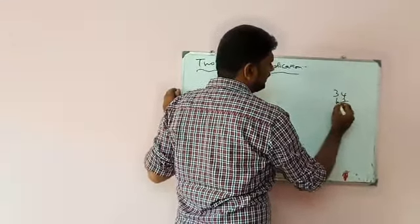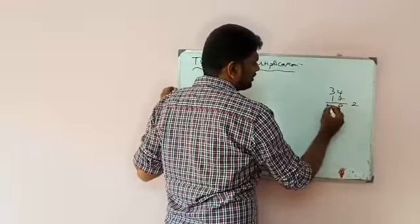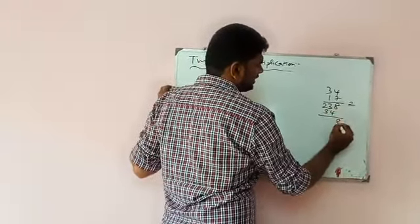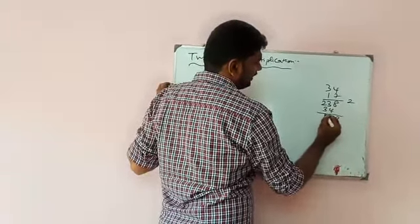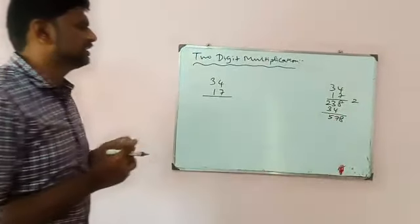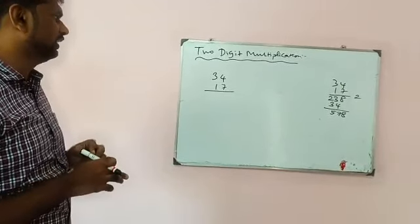7 fours are 28, remaining 2. 7 threes are 21, plus 2 is 23. 1 fours are 4. 1 threes are 3. The answer is 578. So 578 is the answer in the usual way. In the faster way, we are using Vedic mathematics.